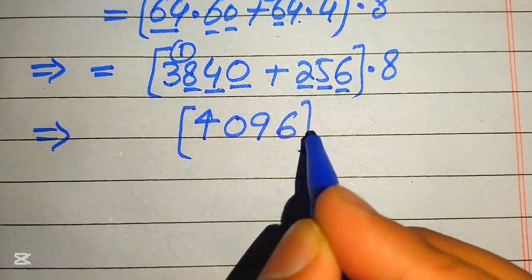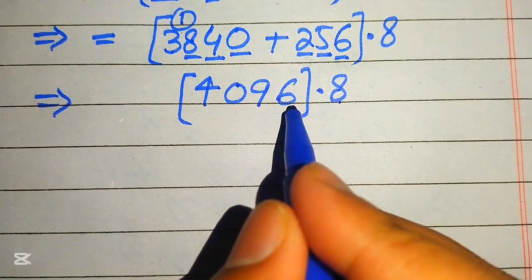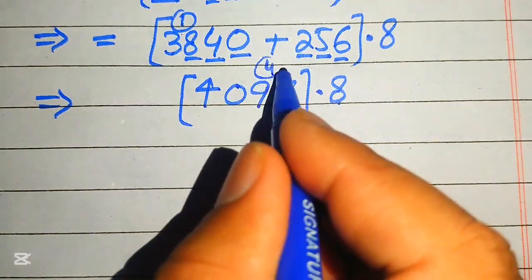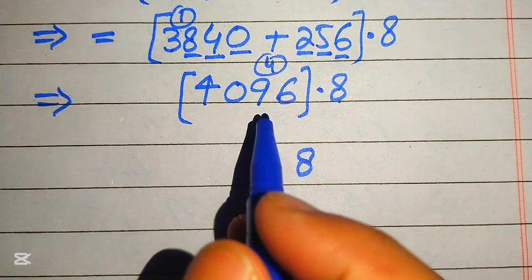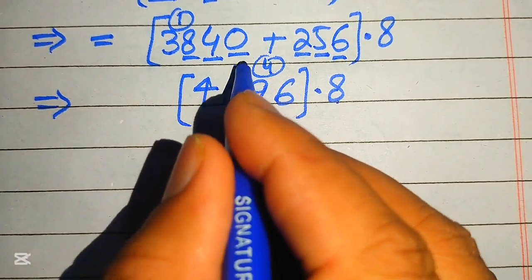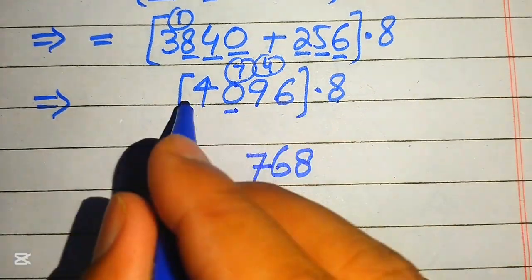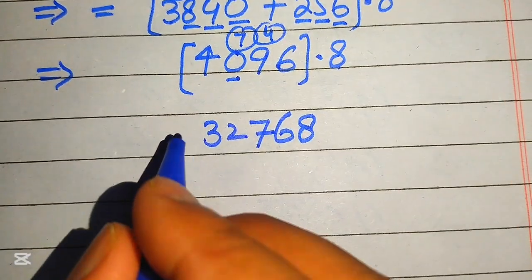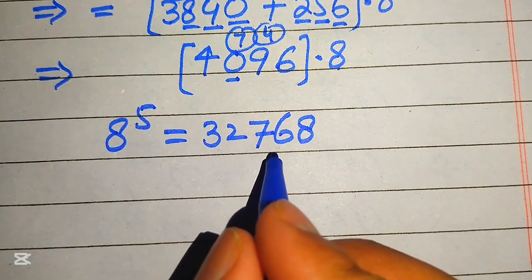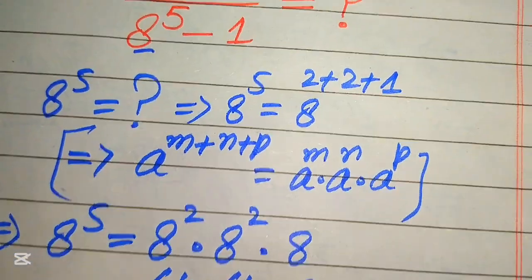Now we multiply 4096 by 8: 8 times 6 is 48 — write 8, carry 4. 8 times 9 is 72, plus 4 is 76 — write 6, carry 7. 8 times 0 is 0, plus 7 is 7. 8 times 4 is 32. So 8 to the power of 5 equals 32,768.